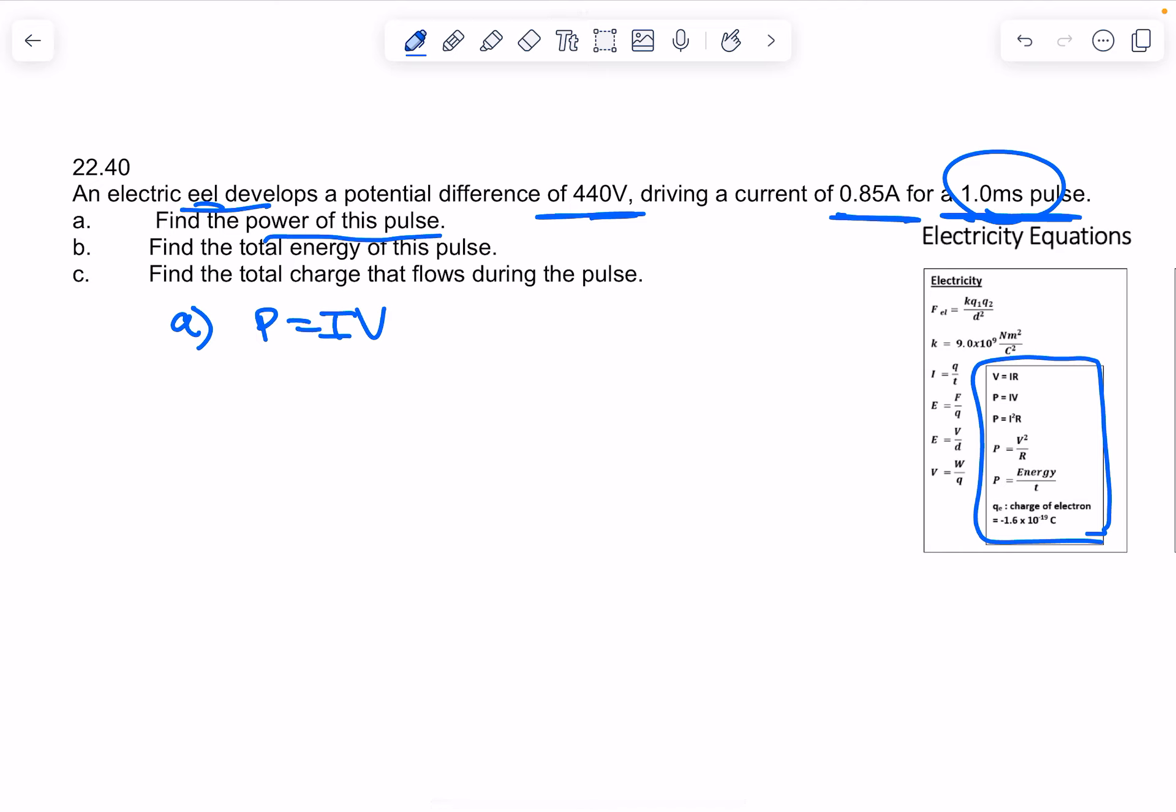For letter b, the total energy of the pulse—now that's going to be this equation: power is energy over time. So you know the power... well, you found the power in part a.